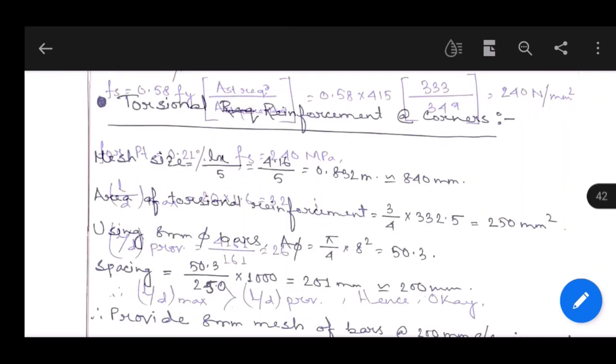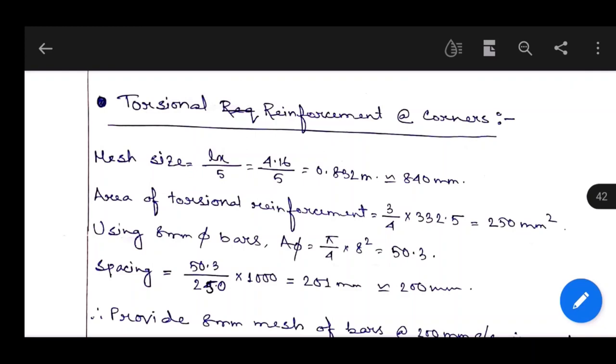Next is torsional reinforcement at corners. In case of two-way slab, in every corner torsional reinforcement must be provided to resist torsional movement. As per IS code, mesh size is lx by 5, equals 4.16 by 5, equals 0.832 meters, equivalent to 840 mm.